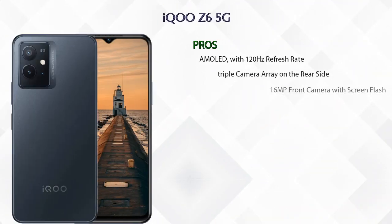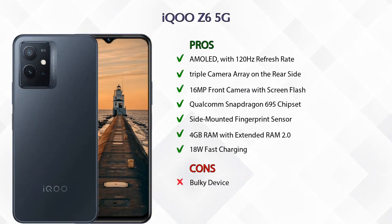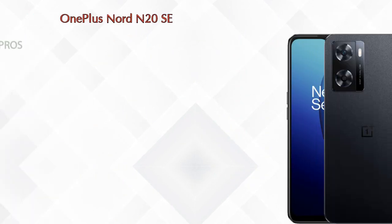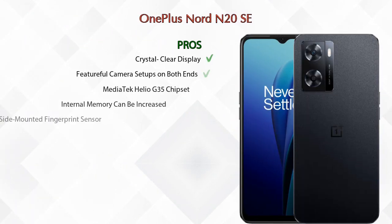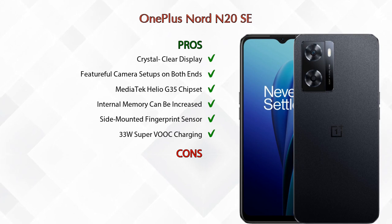Now let's talk about pros and cons. The iQOO Z6 5G has seven pros and one con. The OnePlus Nord N20SE has six pros and zero cons.